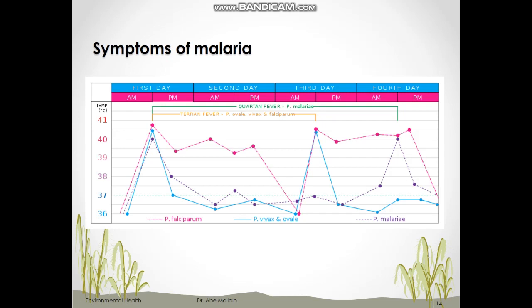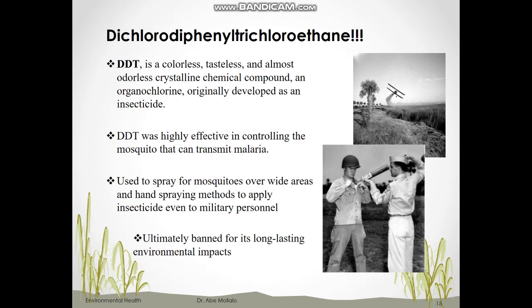A well-known strategy to control malaria was to spray an insecticide called DDT — dichlorodiphenyltrichloroethane. DDT is a colorless, tasteless, and odorless chemical compound that was highly effective in controlling malaria. Biplanes were used to spray DDT over wide areas, and military personnel also sprayed DDT in endemic areas. However, because of its long-lasting adverse environmental impacts on wildlife, especially birds, the use of DDT was banned in 1986.